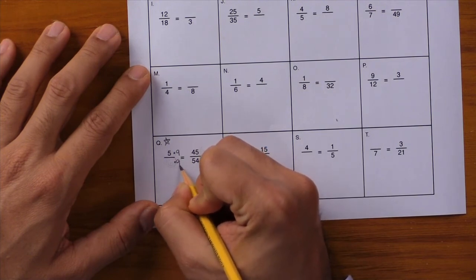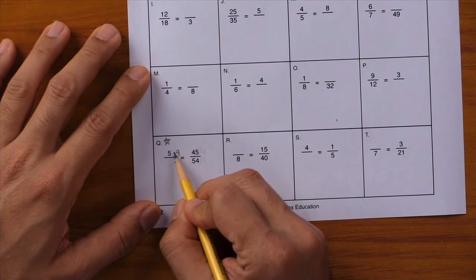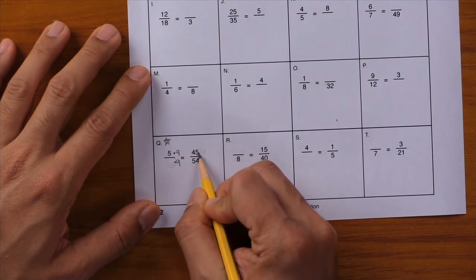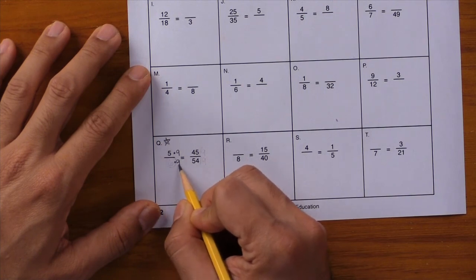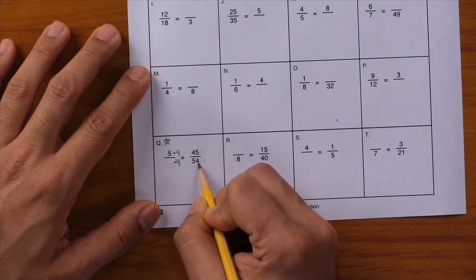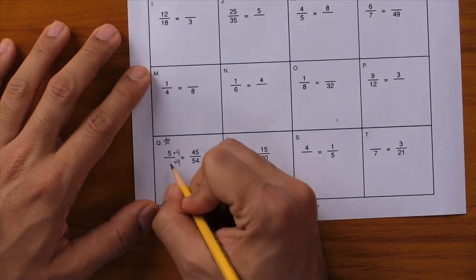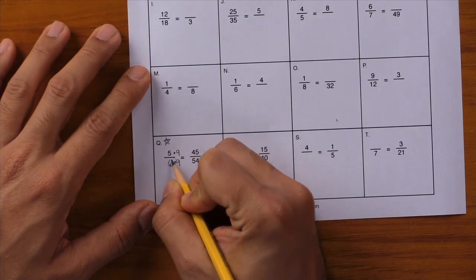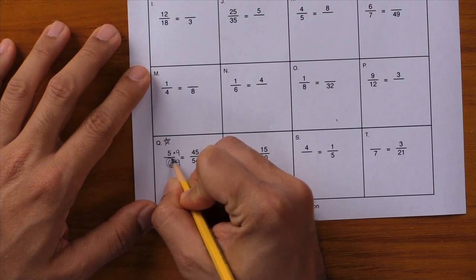5 times 9 gives you 45. And now students need to figure out what number times 9 gives you 54. If they can work it out this way and realize that 6 times 9 gives you 54, then they can arrive at that answer that way as well.